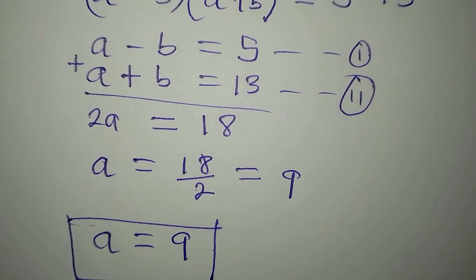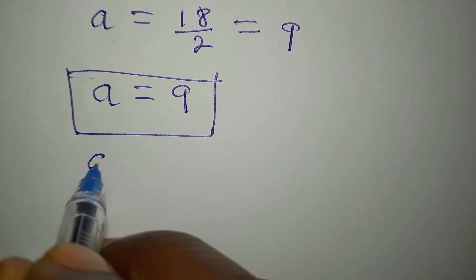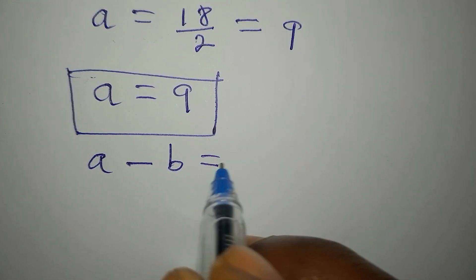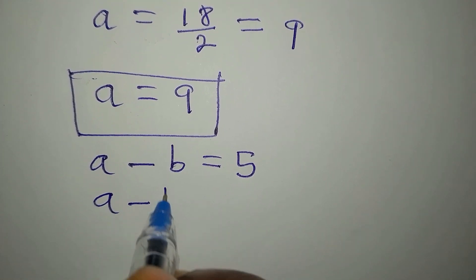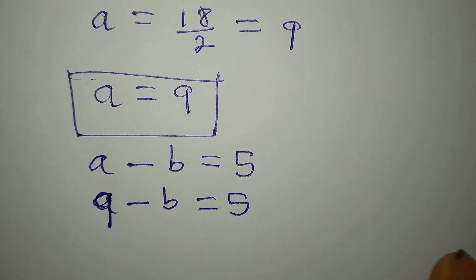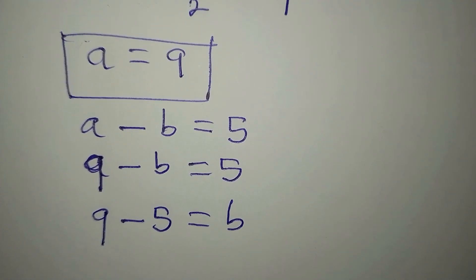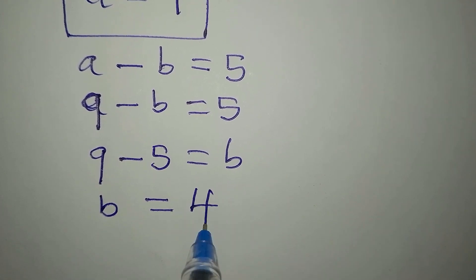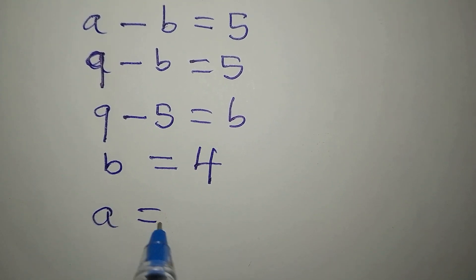Now let's find b by substituting into the first equation where a minus b equals 5. Since a is 9, we have 9 minus b equals 5, so 9 minus 5 equals b, and b is equal to 4.